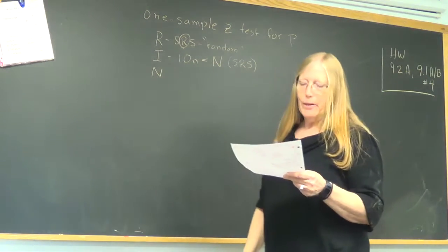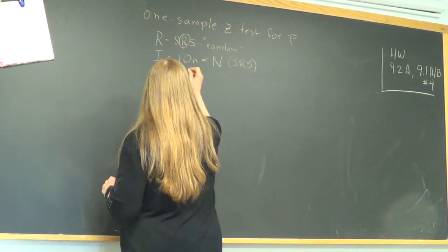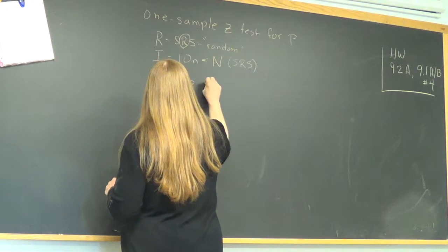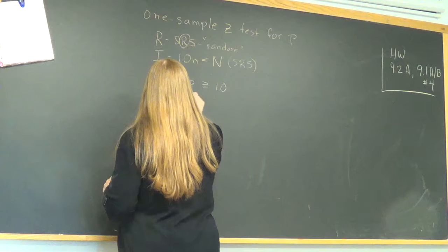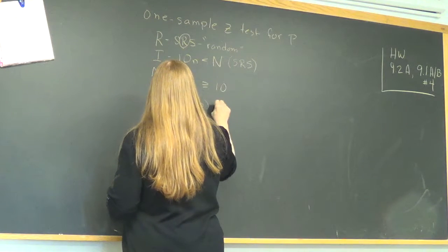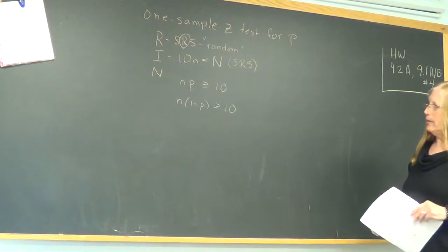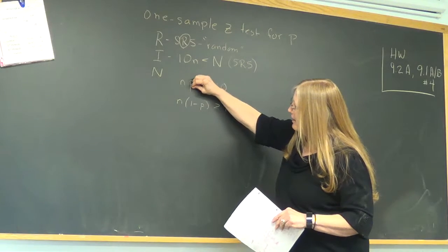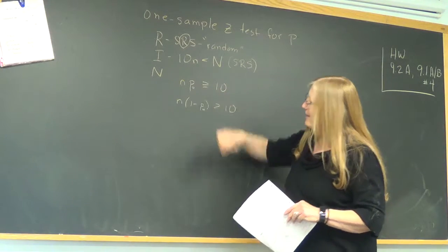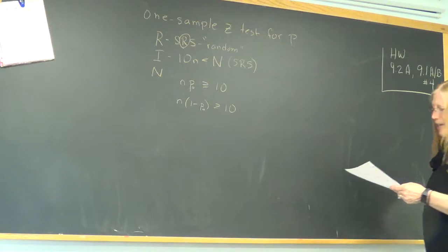And now, normal. Before, this is what we used to do for proportion. We said N times P is greater than 10, or N times 1 minus P is greater than or equal to 10. The only thing that will change is we're going to have a different value here for P. And it is P-naught. And where does P-naught come from?